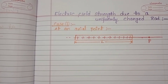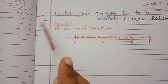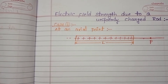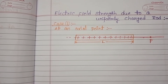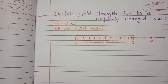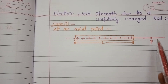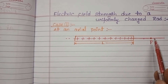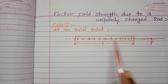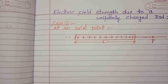Hi students, this is Ramalakshmi, physics faculty. Today our topic is electric field strength due to a uniformly charged rod. The first case is at an axial point. We want to find out the intensity of electric field at a point P, located on the axial line of a uniformly charged rod. Let us start.